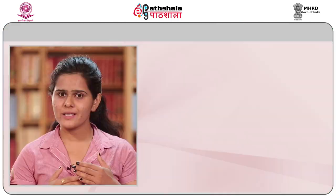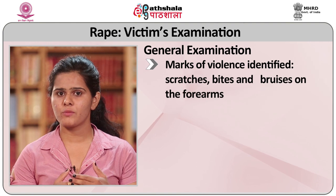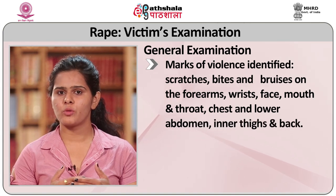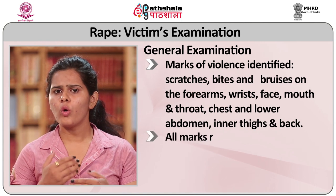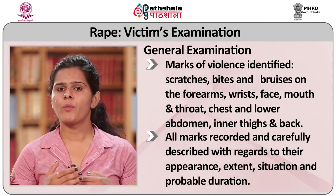The examination of the victim should broadly include a general examination for marks of violence: scratches, bite marks, bruises on the forearms, wrist, face, mouth, throat, chest, lower abdomen, inner thigh, and back. All marks should be recorded and carefully described with regard to their appearance, extent, situation, and probable duration. The coloration of marks changes with duration of time, helping to identify whether rape occurred, providing important clues to the investigating officer.